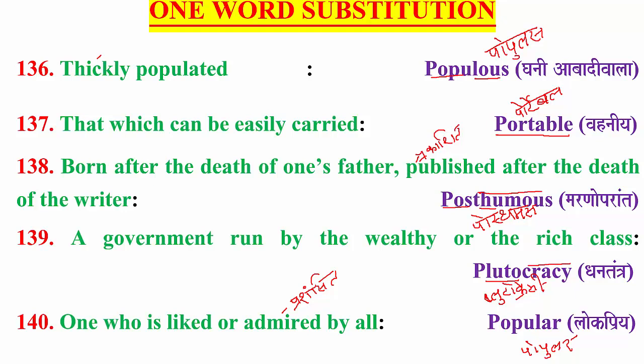Populous means 'ghani abadi' — a densely populated place. In English, 'thickly populated' — thickly means densely, and populated means inhabited. So 'thickly populated' means densely inhabited, and the one English word for this is 'populous'. Remember this spelling.